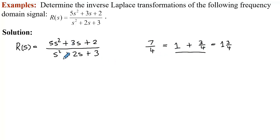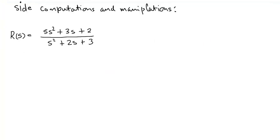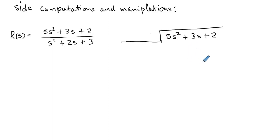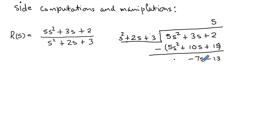That's exactly the strategy we apply here. So the first step is to divide the numerator by the denominator. We're dividing 5s² + 3s + 2 by s² + 2s + 3. The leading term divided gives 5. Multiplying 5 by the denominator gives 5s² + 10s + 15. Subtracting, we get a remainder of −7s − 13. So we have a mixed algebraic fraction: 5 plus the proper fraction with numerator −7s − 13.